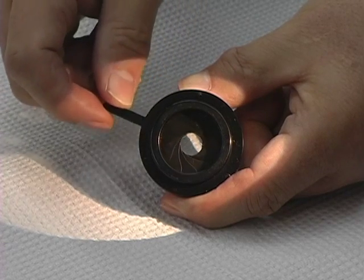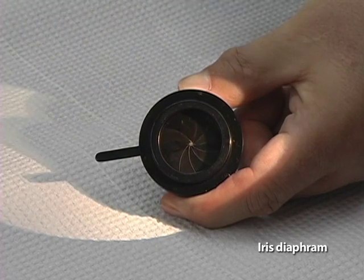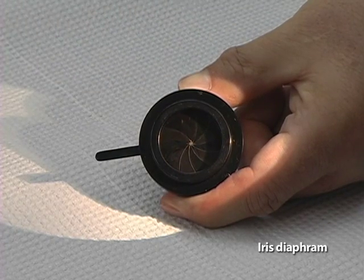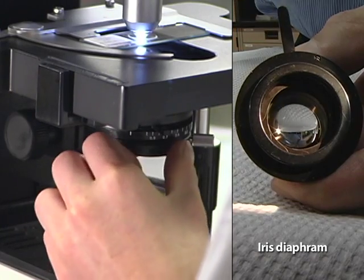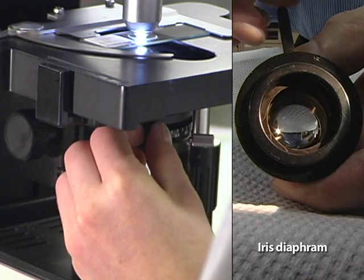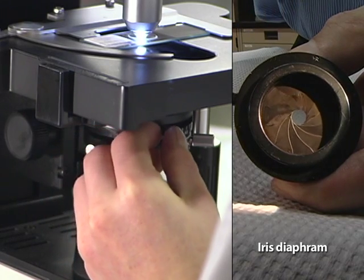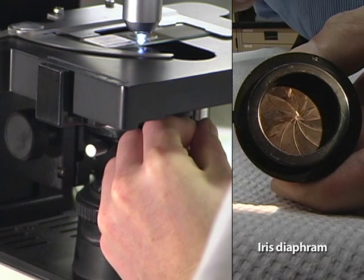Closely associated with the condenser is a device for limiting the diameter of light entering the condenser. The usual mechanism is an iris diaphragm. An iris diaphragm consists of a set of thin, overlapping metal leaves that can be moved by a lever to form a continuously adjustable aperture.